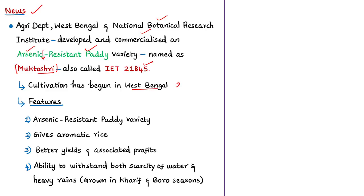The commercialization of this crop was already allowed in West Bengal since last year. Thousands of farmers have started cultivation of this arsenic-resistant paddy variety even in areas where arsenic in groundwater is not an issue, because it resists arsenic absorption, gives better yield and thus better profits to cultivators, and it can also withstand both scarcity of water and heavy rains.